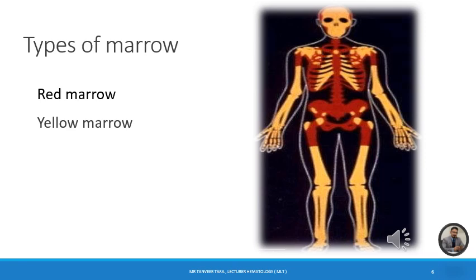Adipose tissue, or fat, is an anatomical term for loose connective tissue composed of adipocytes. Its main role is to store energy in the form of fat. Yellow marrow is also known as medulla ossium flava and consists of adipose tissue. In adult marrow, tissue located in the middle portion of long bones mostly consists of adipose tissue, which imparts a yellowish color. The ratio of marrow tissue compared to adipose tissue is very low, which is why it is called yellow bone marrow.